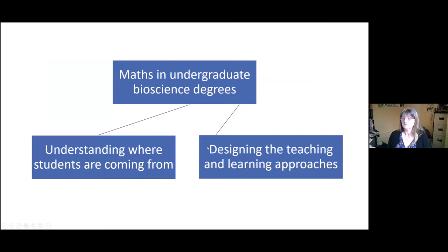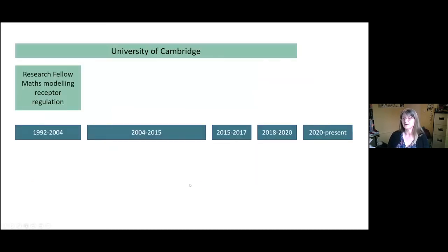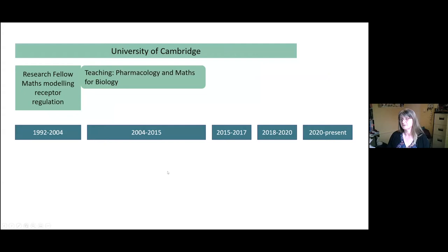I'm going to divide this topic into two parts: one is thinking about where students are coming from and understanding that, and then thinking about how we can integrate this into teaching and learning. Just a little bit about where I'm coming from — my research back in the day was maths modelling in receptor regulation, and then I had a portfolio career for a while. I did a lot of small group teaching in Cambridge, and it was a real privilege to work with very talented students and get to know them well, which has really informed what I'm speaking about today.